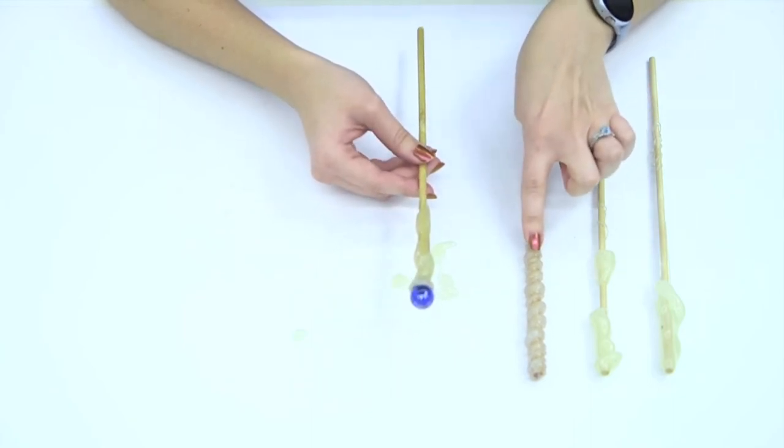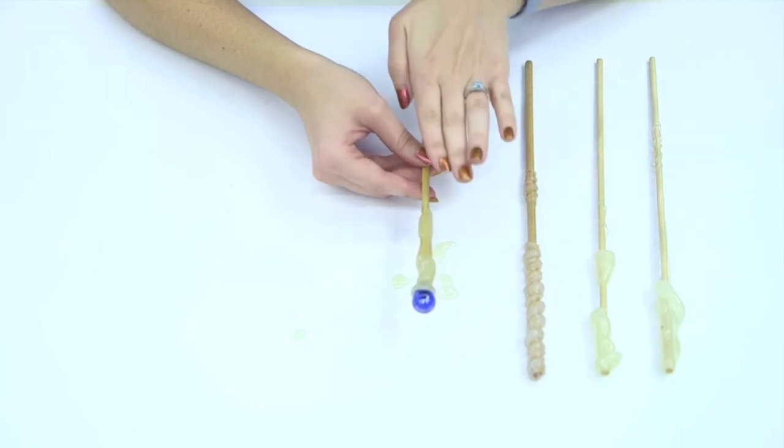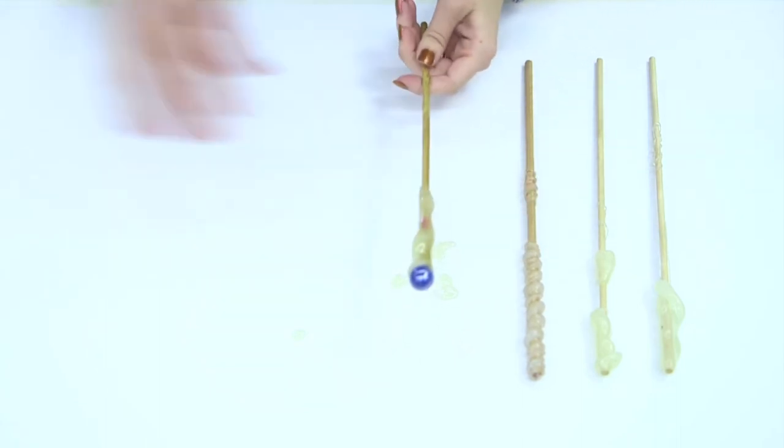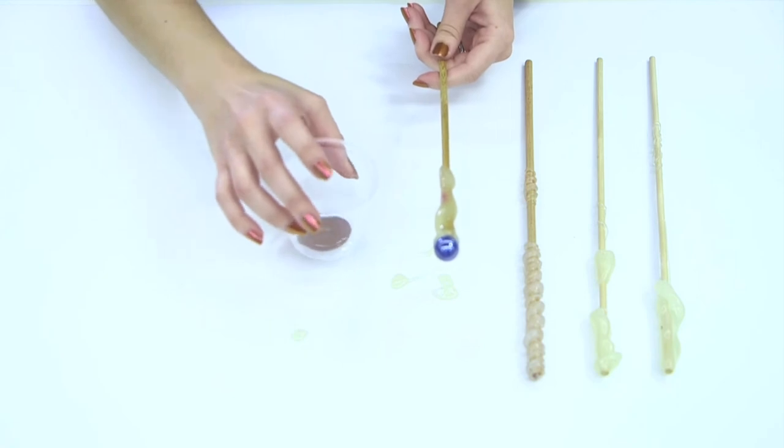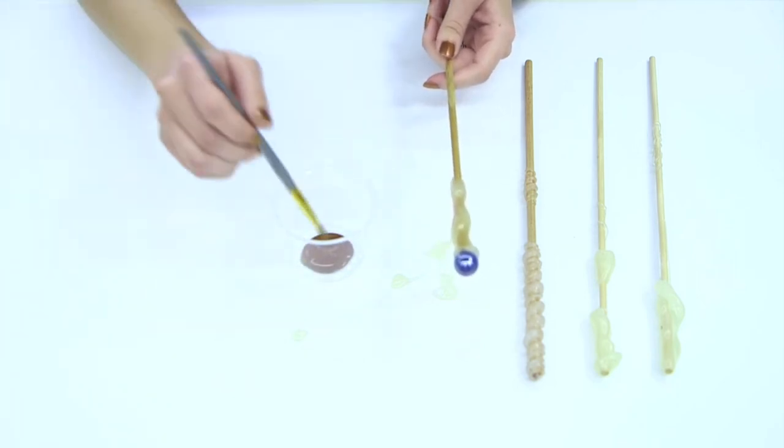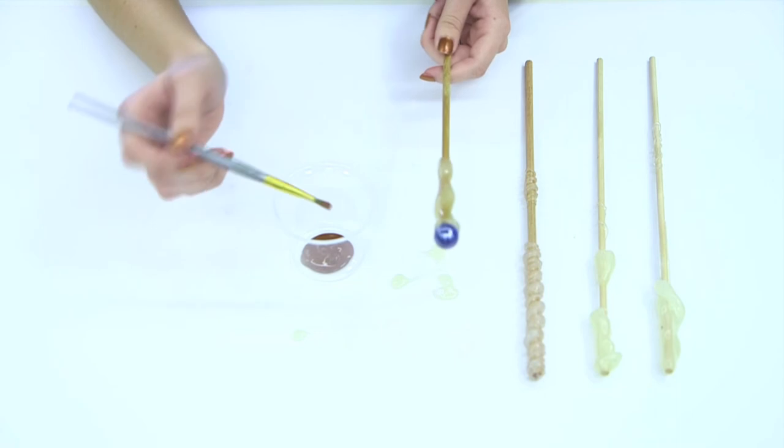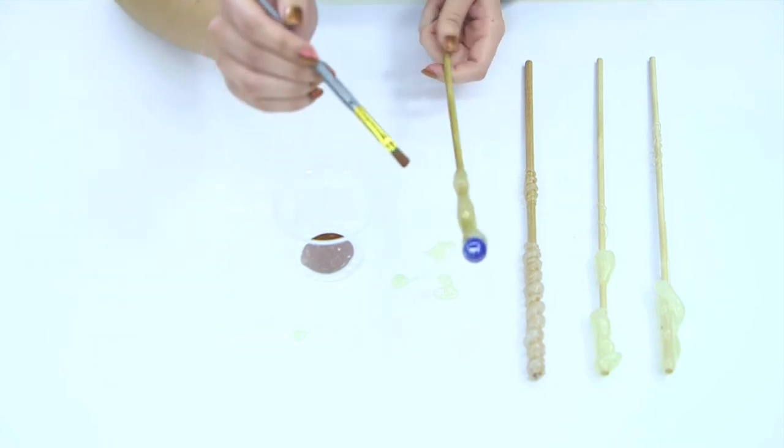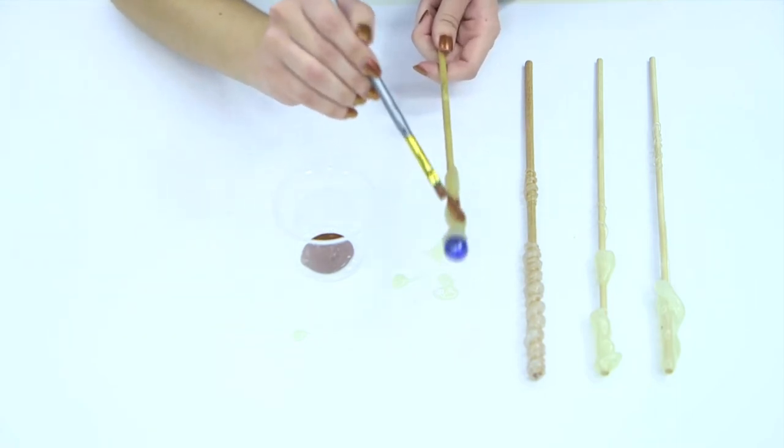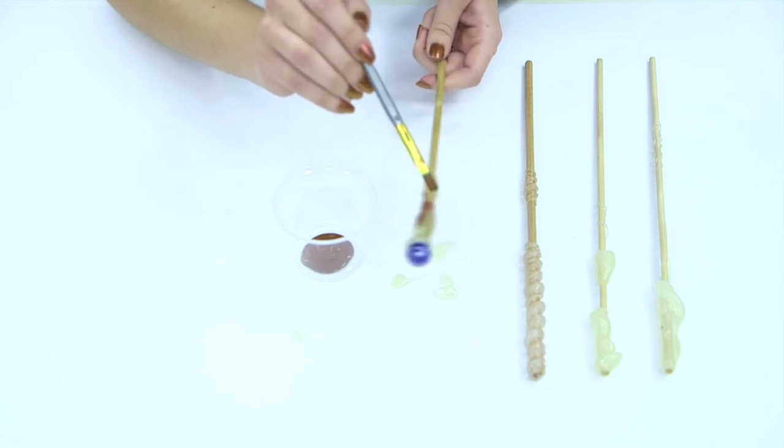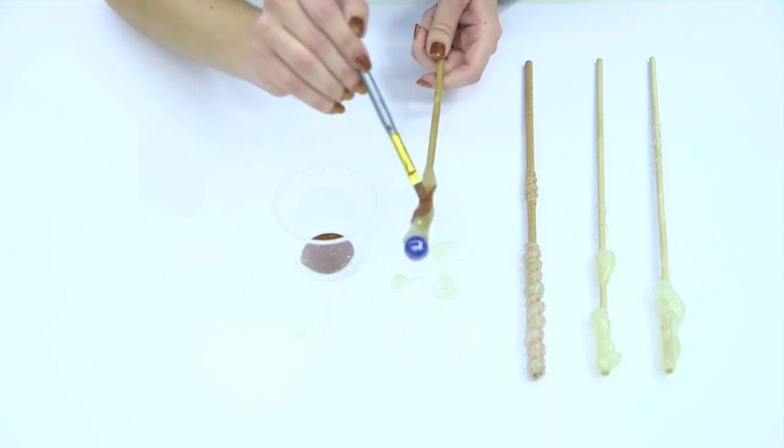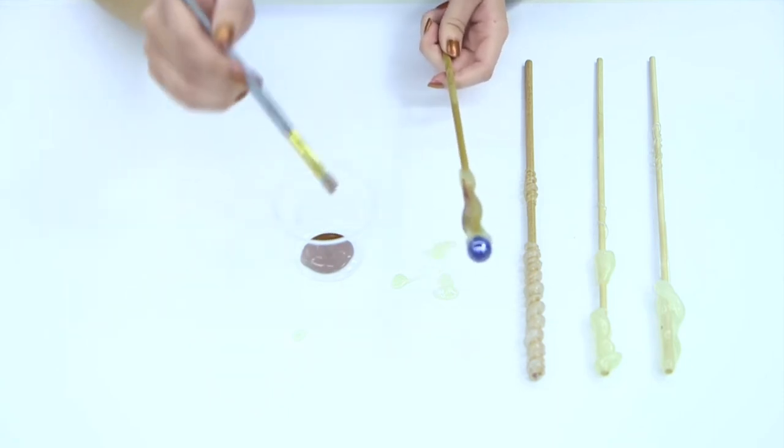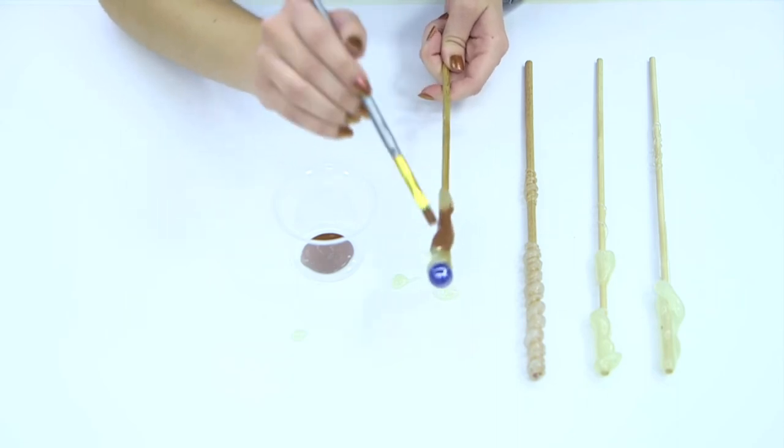So now what we're going to do is start painting our wand. I have just a dark brown paint here. You can do whatever shade of brown or you can just go completely on your own and do a blue, a purple. You can make a Hufflepuff wand, do a Gryffindor, do whatever colors whatever patterns you want and we're just going to start applying that paint.